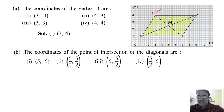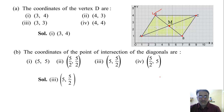The coordinates of the point of intersection of the diagonals are 5 and 2.5 — that is, 5 and 5/2. So the answer is (5, 5/2). Any doubt?